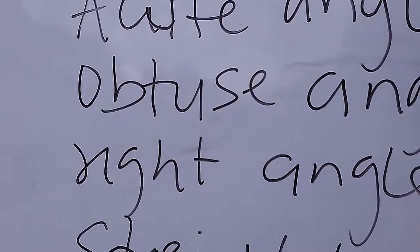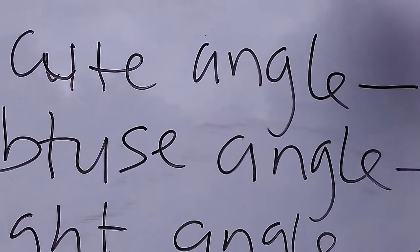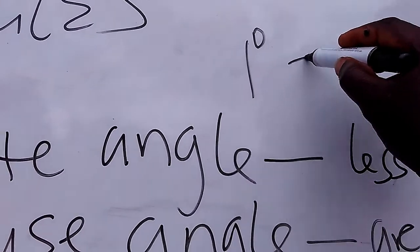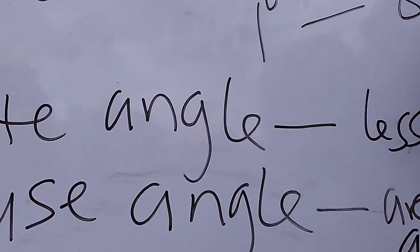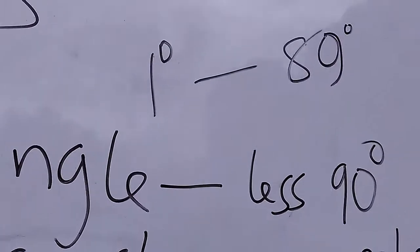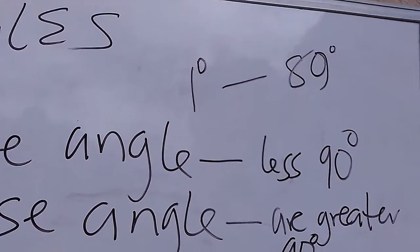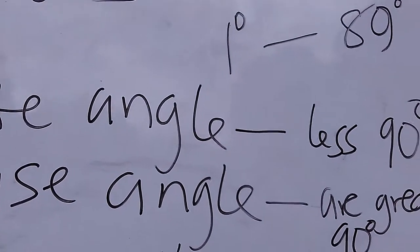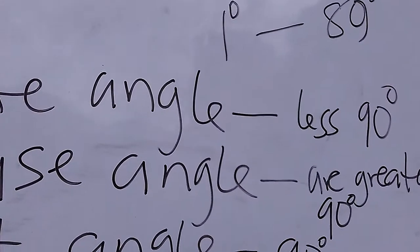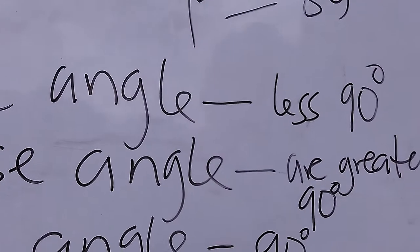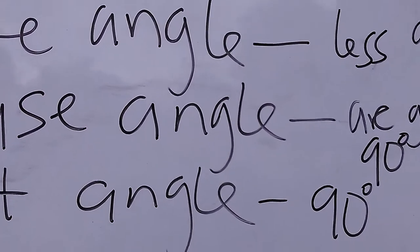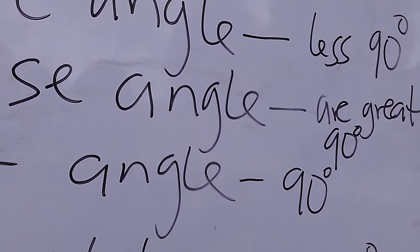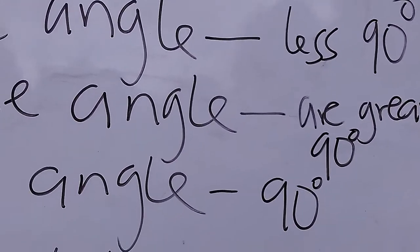For example, Acute angles are angles from 1 degree to 89 degrees. These are acute angles — like 45 degrees, 30 degrees, 70 degrees, 60 degrees, 55 degrees. All these angles are examples of acute angles because they are less than 90 degrees.